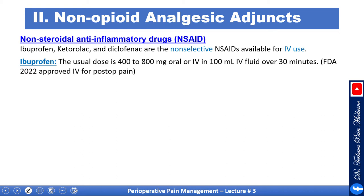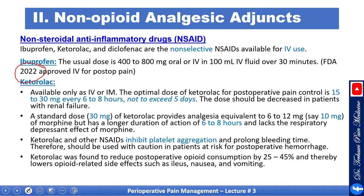Ibuprofen, ketorolac, and diclofenac are non-selective NSAIDs available for IV use. Ibuprofen is typically 400 to 800 mg orally; the FDA recently approved IV ibuprofen for postoperative use. Ketorolac is available as IV, IM, or oral. The optimal dose for postoperative pain control is 15 to 30 mg every six to eight hours. Do not exceed five days of treatment.